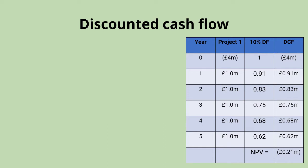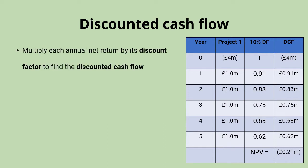The steps for this method of investment appraisal are: first, line up the discount table with the expected returns from the project. Then multiply each yearly return by its discount factor to find the discounted cash flow for each year. So we've multiplied one million pounds by 0.91 to find the discounted cash flow for year one of 0.91 million. What we're saying is the expectation of a million pounds in a year is worth the same to us as 0.91 million pounds today using that 10 percent discount factor. A million pounds in two years is worth the same to us as 0.83 million pounds today, and so on.